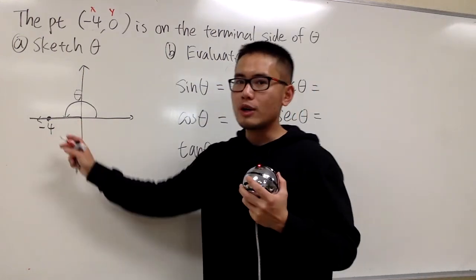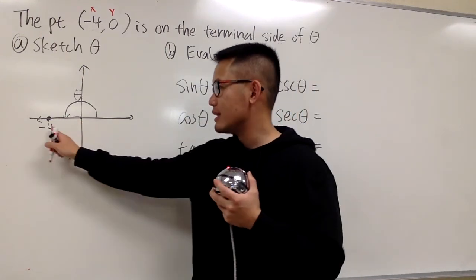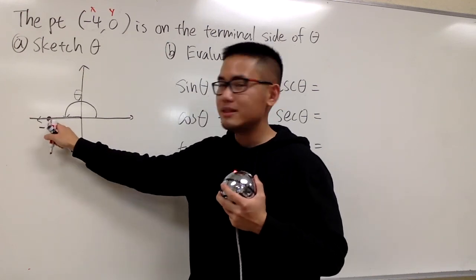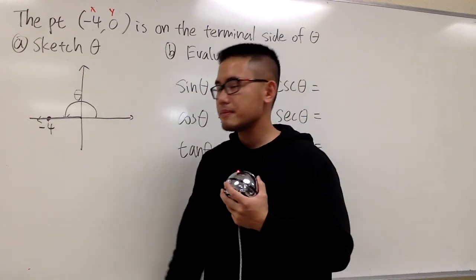And this is, once again, a quadrantal angle because we cannot draw a right triangle. The point is on the x-axis, right?